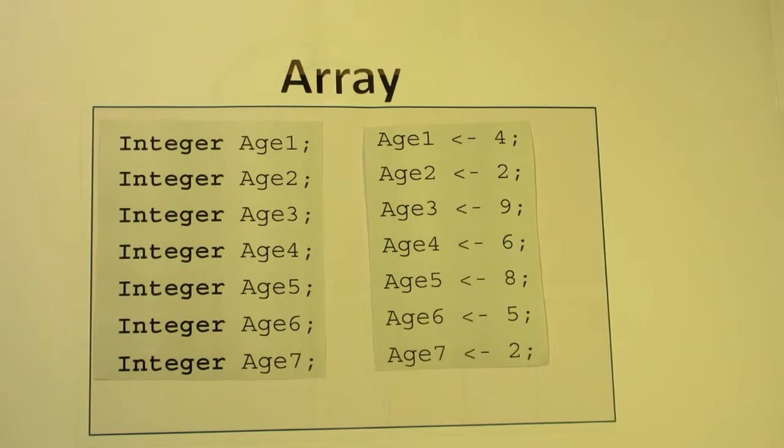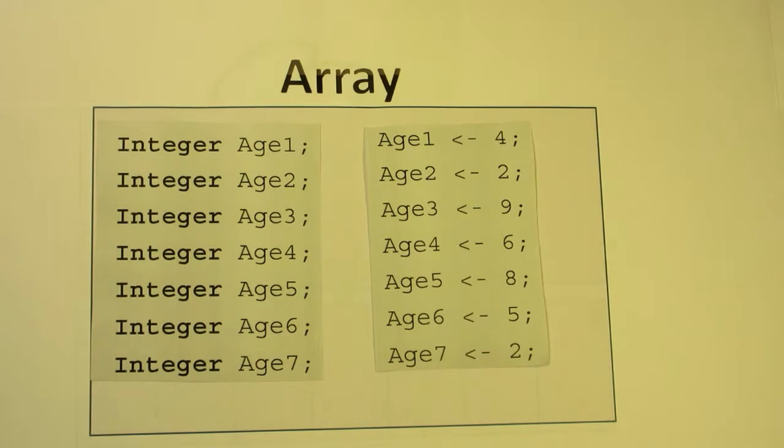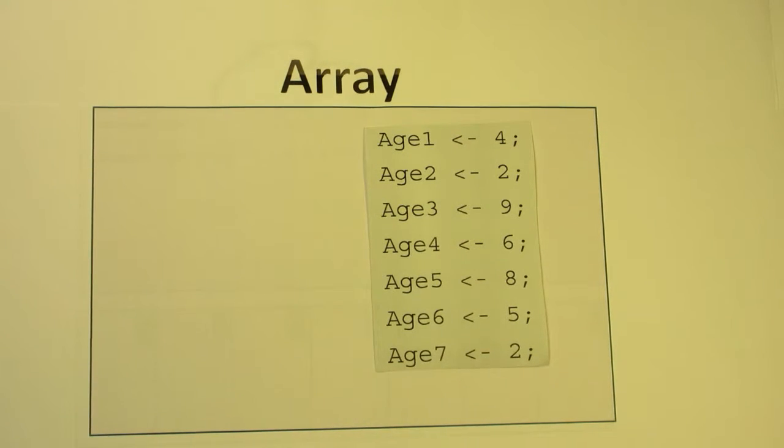Now we have a new, cooler way of doing things. Instead of having to declare each variable separately - Age1, Age2, Age3, Age4, Age5, Age6, Age7 - we can get rid of that completely and replace it with simply this. Now we've got a single variable declaration that declares an integer collection, a collection of integers, and there are seven of them.